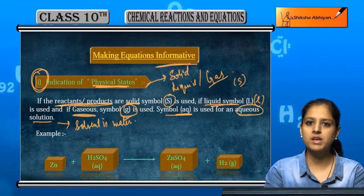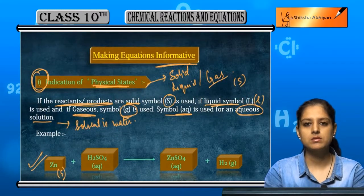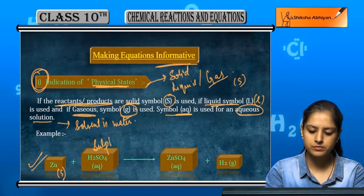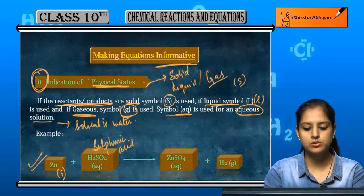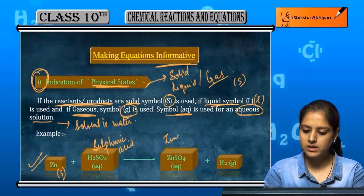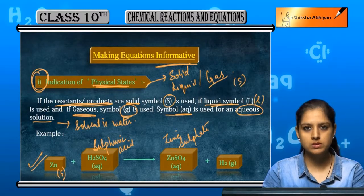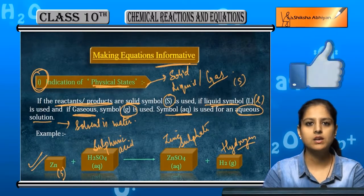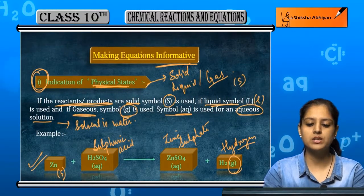So in this case, if we look at example, we have zinc, which is a solid, so Zn bracket small s plus H2SO4, that is sulfuric acid, which is aqueous solution, so we have written aq in brackets. Then ZnSO4, that is zinc sulfate, which is also an aqueous solution, so we have written aq in brackets. H2 is hydrogen, which is a gas, so we have written g in brackets. So the first step is indication of physical states.